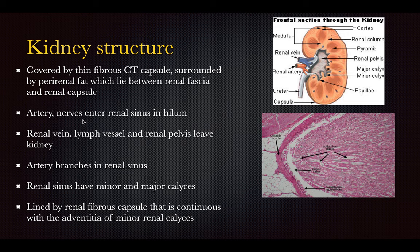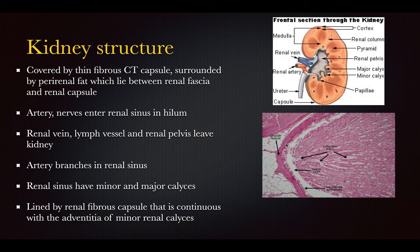Vessels will enter the sinus, which is the area in the hilum of the kidney. The renal vein, lymphatics, and renal pelvis will leave in a lower area. The artery will branch in the renal sinus to supply the pyramids and the calices, and they are all lined by a renal fibrous capsule that is continuous with the adventitia of the minor renal calices.